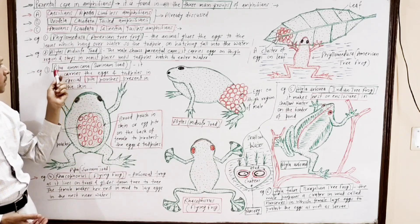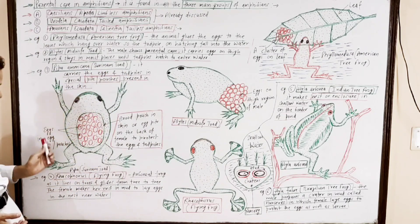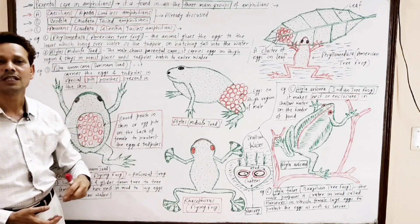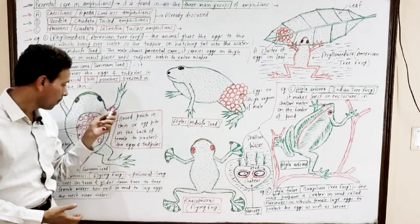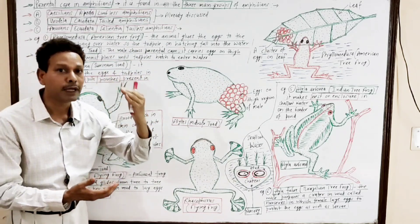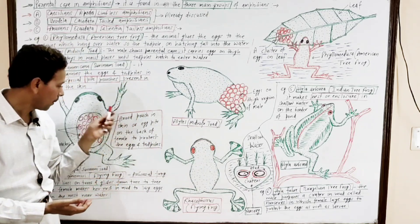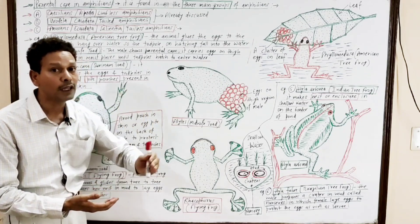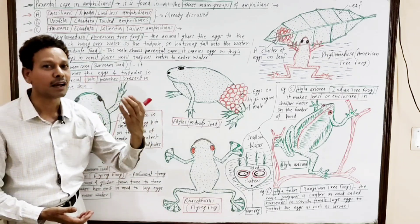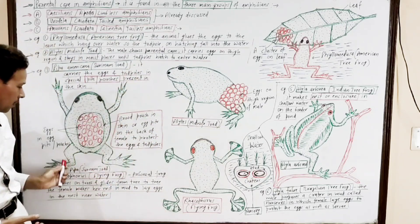The third example is Pipa americana, the Surinam toad. As shown in the diagram, on the back region of the female, the skin develops special pits or pouches — these are brood pouches. The eggs as well as the tadpole larvae are protected in these special pits or pouches on the back region of the female Pipa Surinam toad.